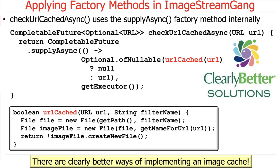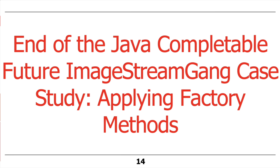So what we return from this — we return a completable future because that's what supplyAsync always does. It returns a completable future to an optional URL. You can see if you look at the checkURLCachedAsync parameter: it does the processing asynchronously and returns a completable future to an optional URL such that once the check completes, that optional URL will either have a value present if it was not cached, or it'll be empty if it was already cached. That's what we're doing here to start everything in motion using the supplyAsync factory method. And you'll agree this is very subtle and somewhat complicated code.